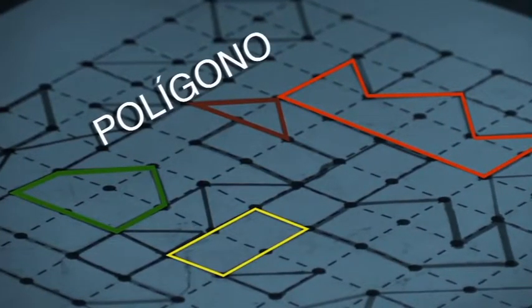La palabra polígono está formada por dos voces de origen griego: polis, que significa muchos, y gonía, que significa ángulos. Por lo tanto, es una figura que tiene muchos ángulos.